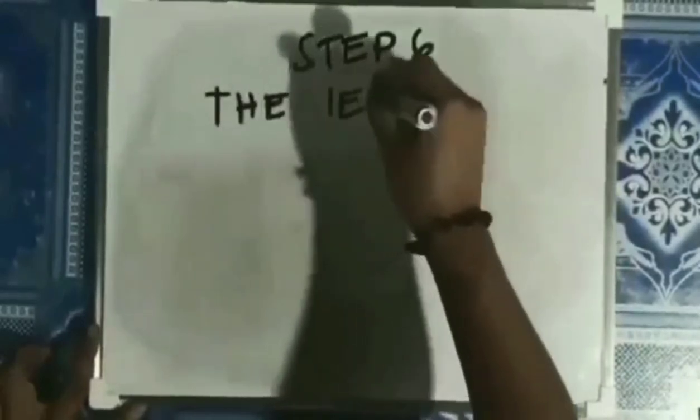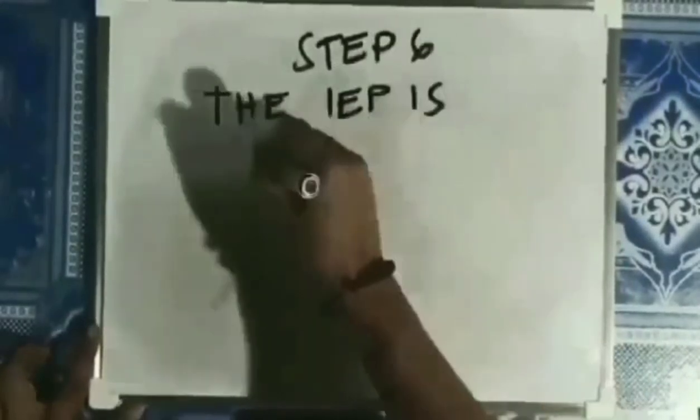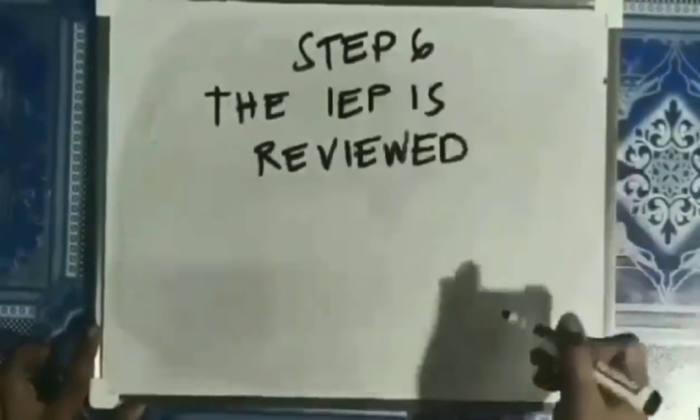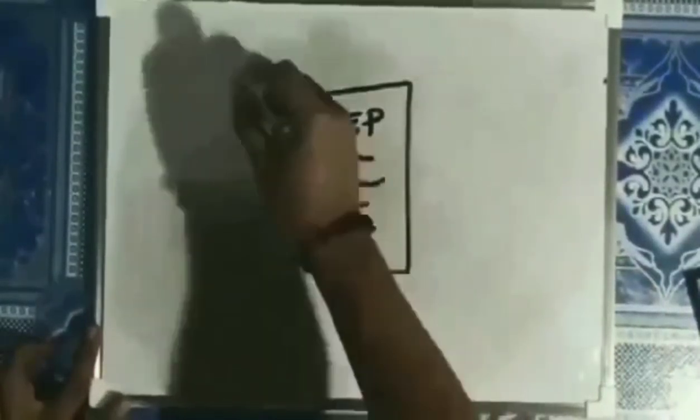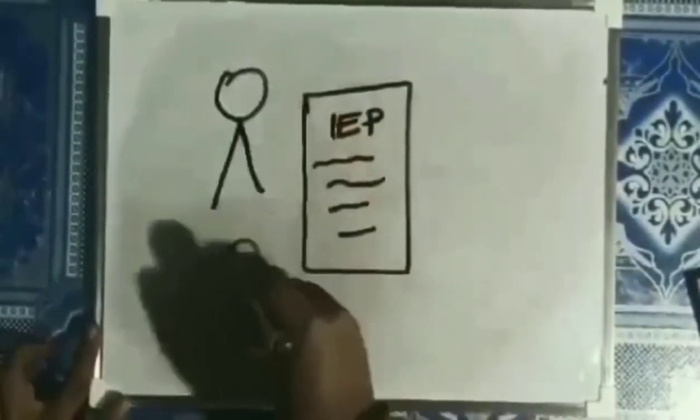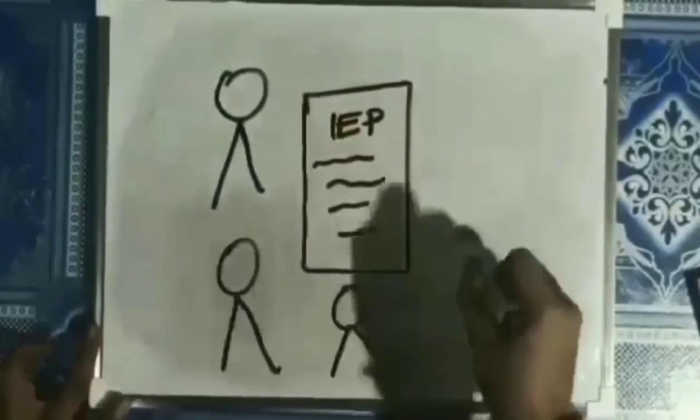Step 6: The IEP is reviewed. The child's IEP is reviewed by the IEP team at least once a year.